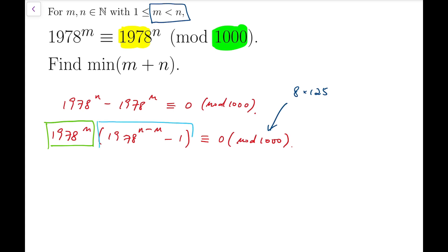Because at the same time, the other part of the product is odd. So that means this has to be multiple of 8, and at the same time, the other part has to be multiple of 125.